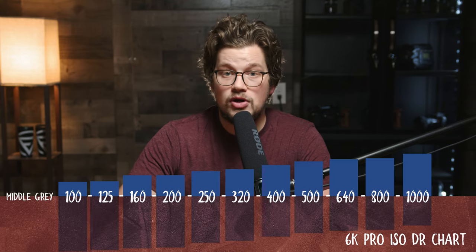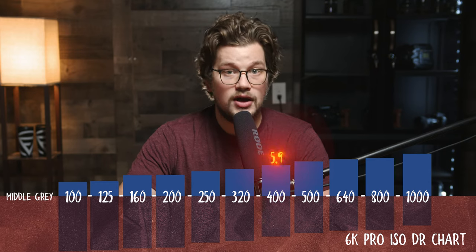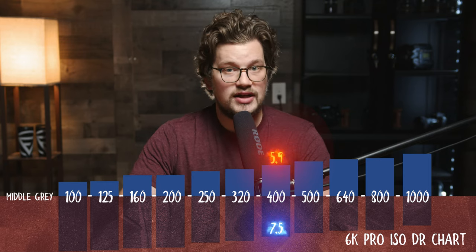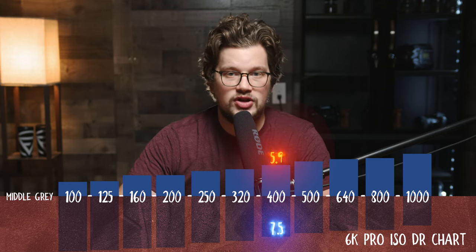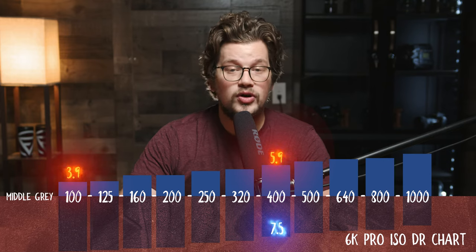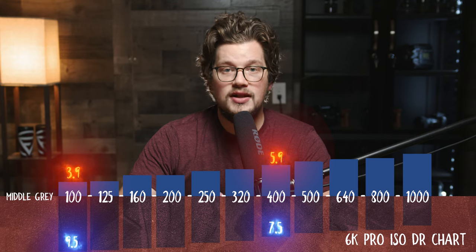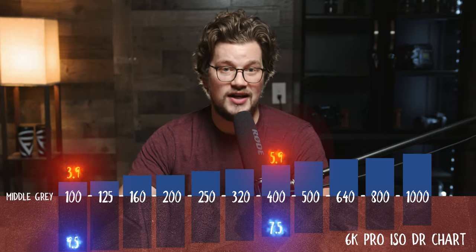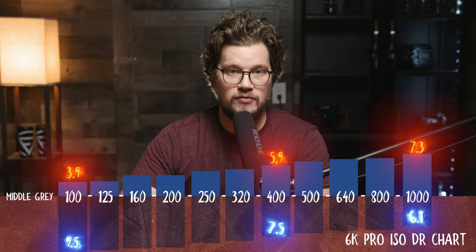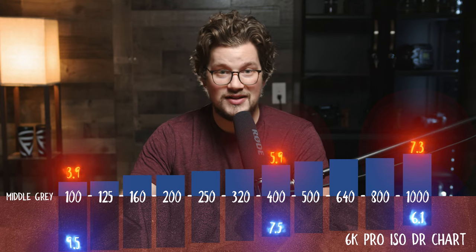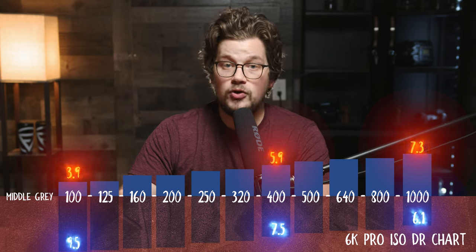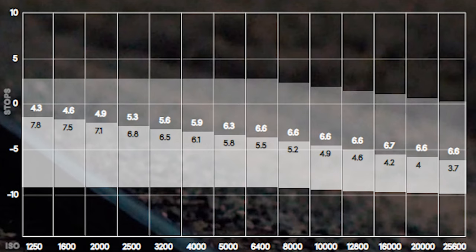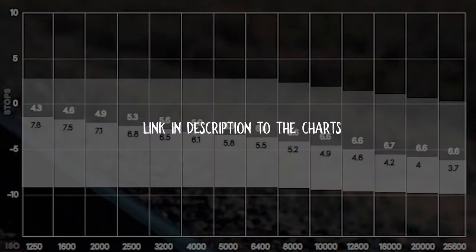Each time you adjust your ISO, the dynamic range values shift. At native 400 ISO, you have 5.9 stops above middle gray and 7.5 stops below — slightly more range in the shadows. But if you go all the way to 100 ISO, you only have 3.9 stops above middle gray and 9.5 below, meaning very little highlight range. You'd actually have better success exposing at 1000 ISO in direct sunlight, since it gives 7.3 stops above middle gray — about four stops more than 100 ISO.